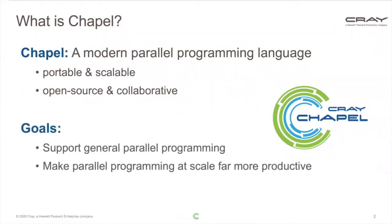The two main goals of Chapel are to support general parallel programming — if you have a parallel algorithm in mind and some parallel hardware you'd like to run it on, Chapel ought to allow you to do that. And the second is to make parallel programming at scale far more productive than it is today, creating a language whose code is as easy to read and write as Python, but whose performance competes with C or Fortran plus MPI plus OpenMP.